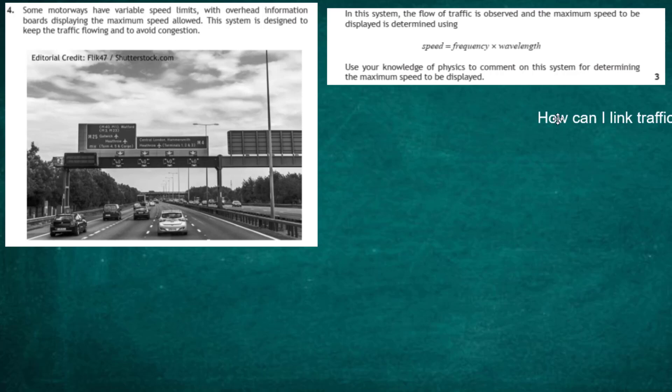We need to use our knowledge of physics to comment on this system for determining the maximum speed to be displayed. Obviously the traffic flow has been modeled on waves — that could be your first statement. We're playing for three marks, so we don't need to write an essay. We just write down logical things related to physics. We can ask: how can I link traffic to the wave equation, and how can I use it as a model for traffic?